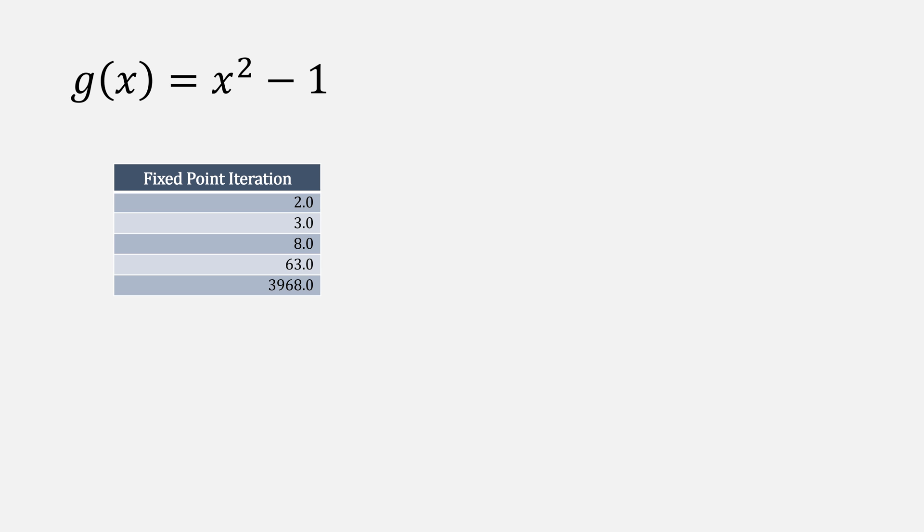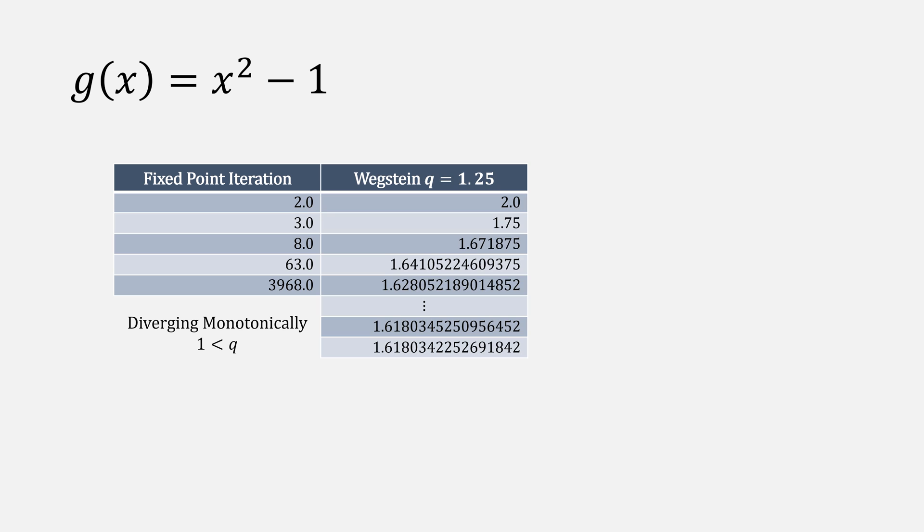And this last example is fixed-point iteration diverging monotonically, therefore we'll need to choose a q that is greater than 1. If we choose q of 1.25, it takes about 18 iterations to force this to converge.